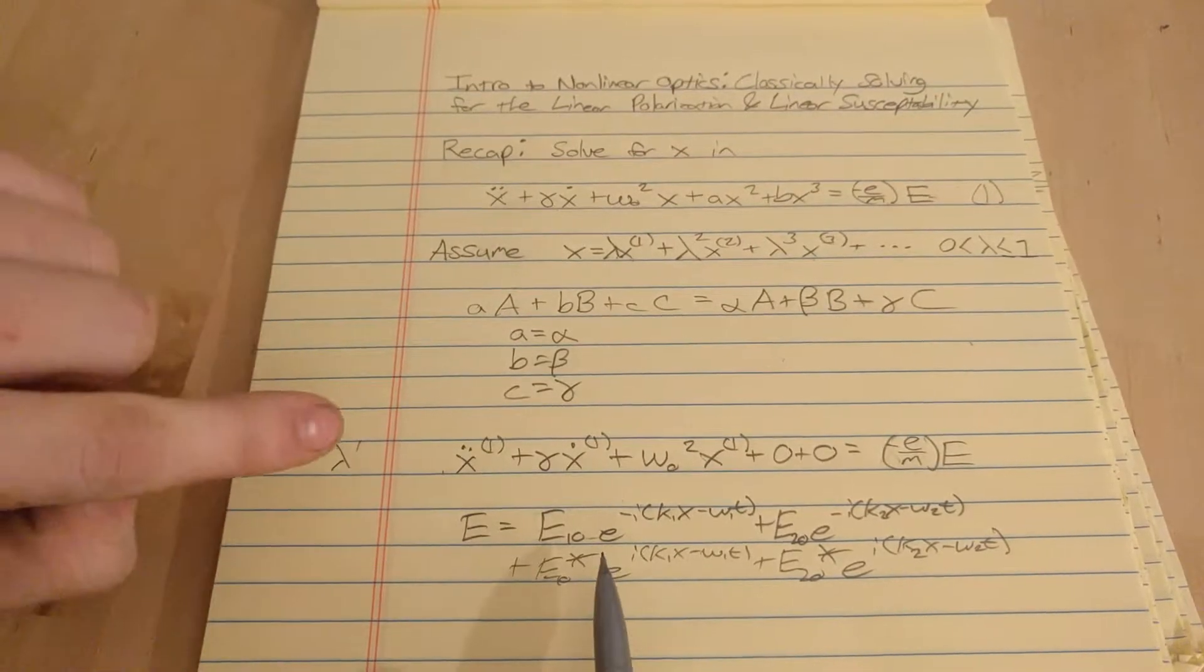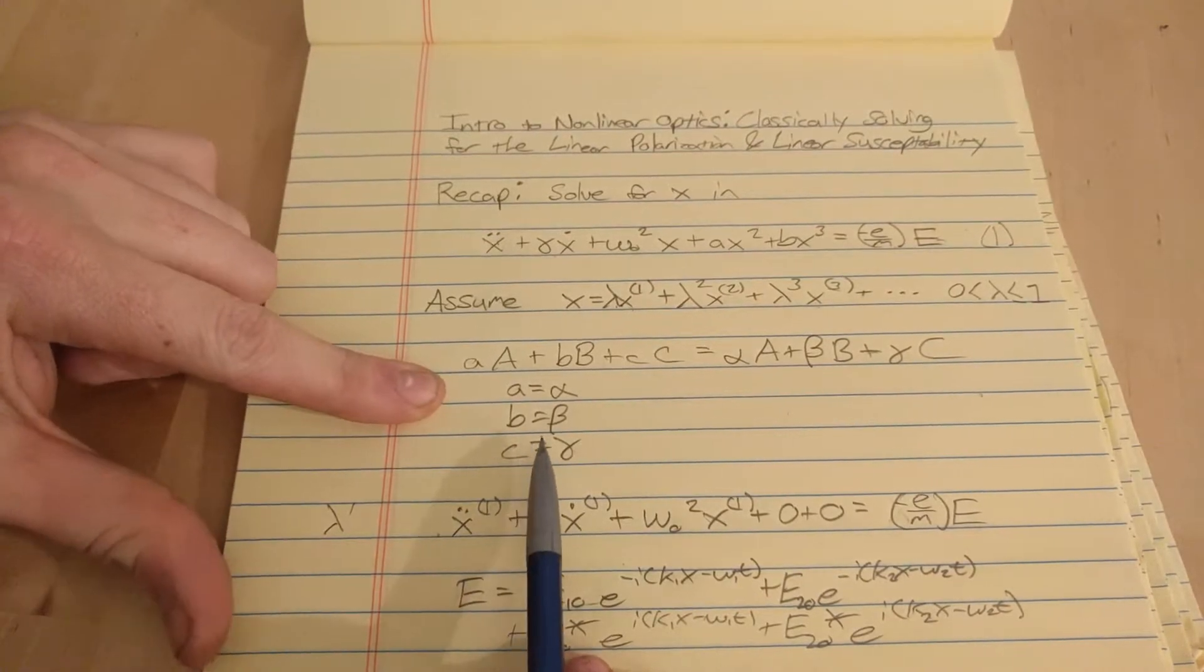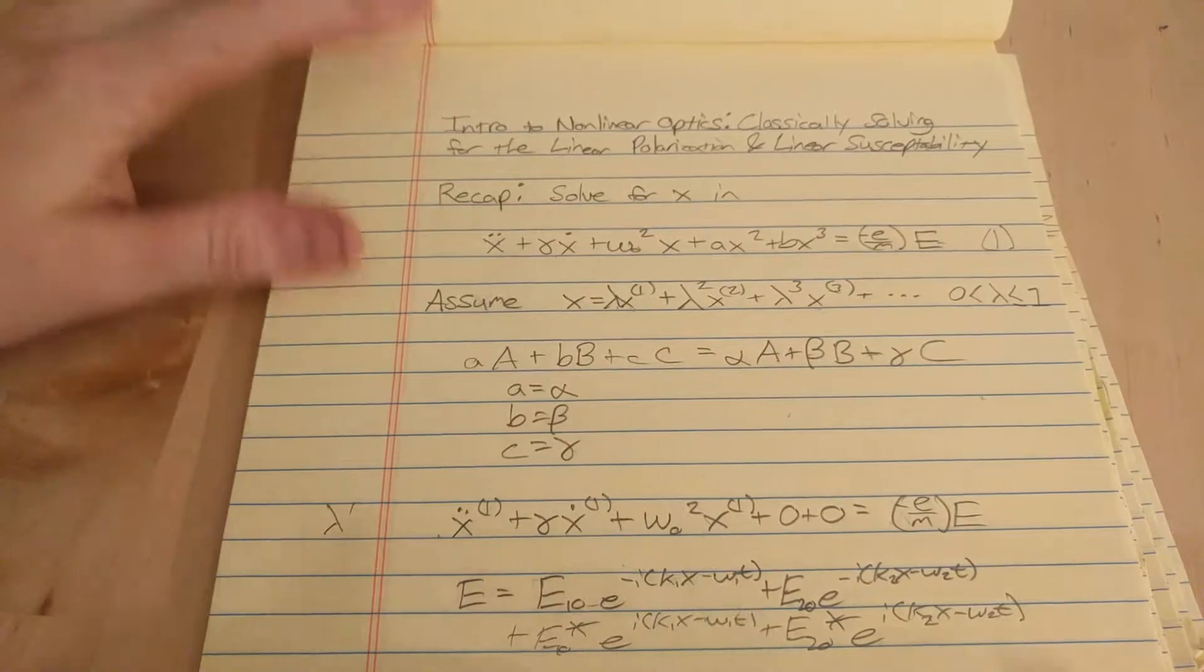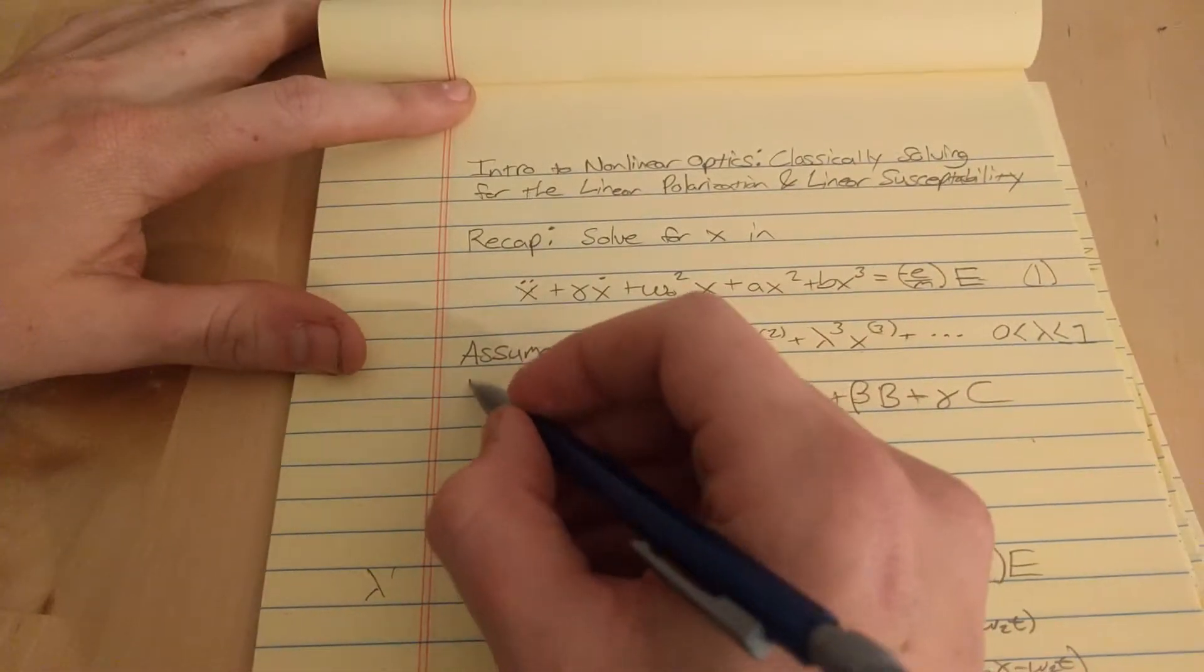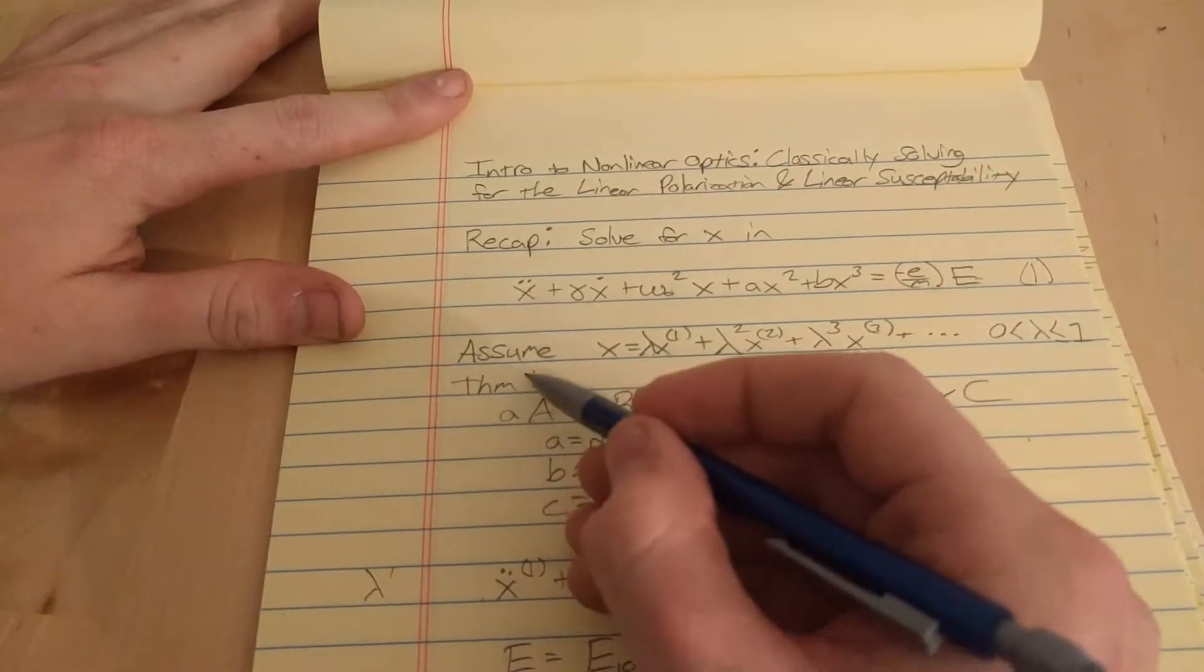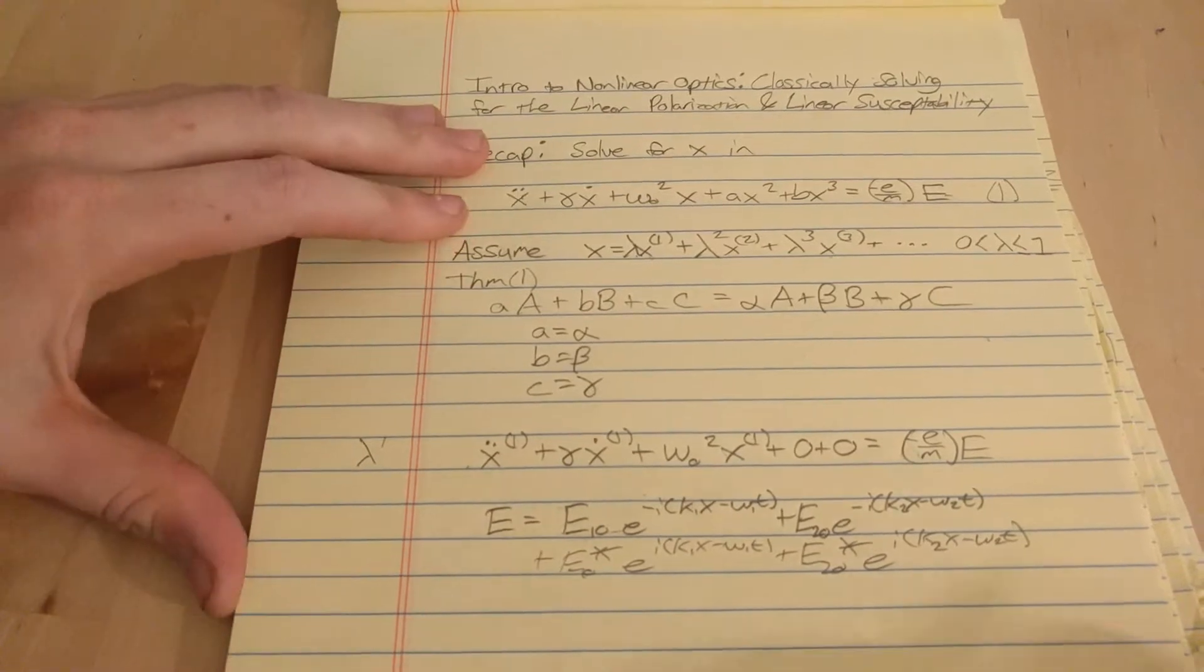And, also, we're going to use this fact again, the fact that I stated up here. So, I don't exactly know what it's called, but I'm pretty sure it's correct, and I'm just going to call it theorem 1. Because we're going to use it again, and whenever I use it, I'm just going to say according to theorem 1, even though I'm not going to prove it.